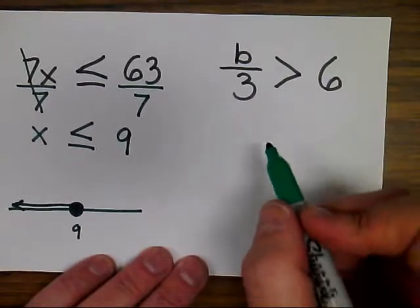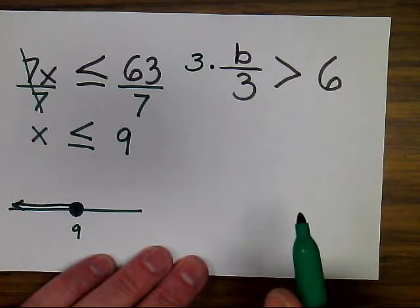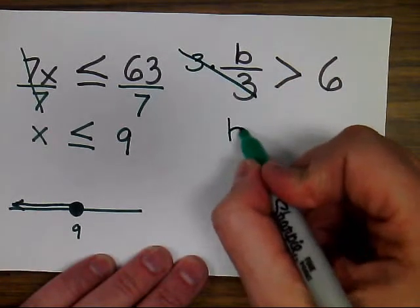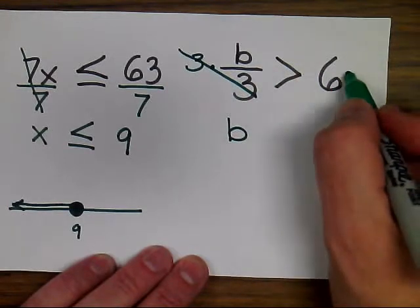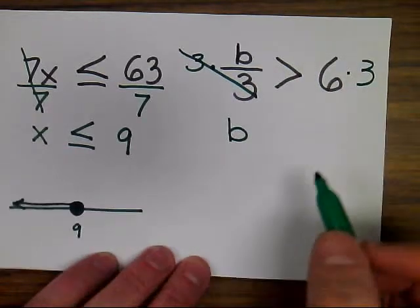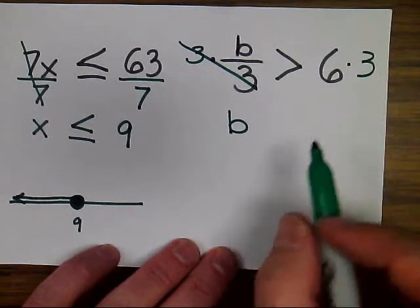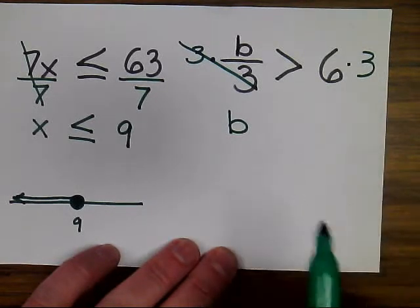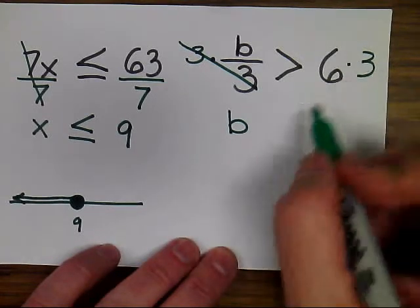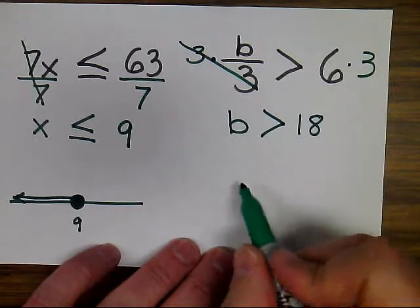In this division inequality, I'm going to do the inverse operation, which means I'm going to multiply 3 times b divided by 3, and that cancels out and leaves me with just the b. Because I've multiplied this side by 3, I'm now going to multiply this side by 3 because the property of inequality states that if I multiply both sides by a positive value, the two sides will remain true.